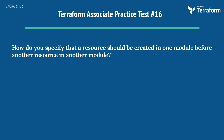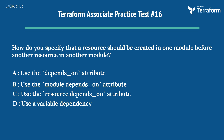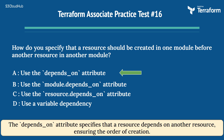The sixteenth question: how do you specify that a resource should be created in one module before another resource in another module? Options are: A) use the depends_on attribute, B) use the module.depends_on attribute, C) use the resource.depends_on attribute, D) use a variable dependency. The right answer is Option A, use the depends_on attribute. The depends_on attribute specifies that a resource depends on another resource, ensuring the order of creation.